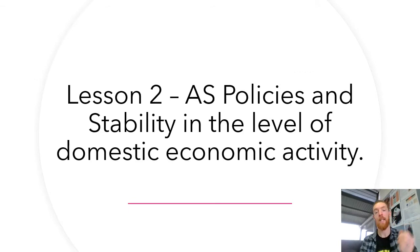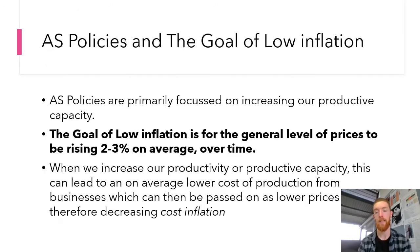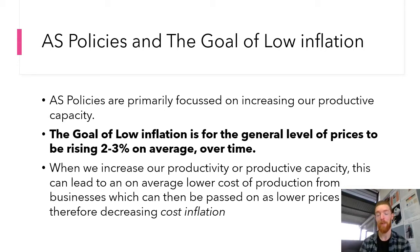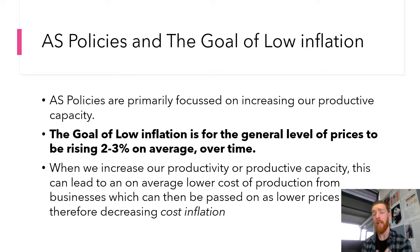AS policies and the stability in the level of domestic economic activity. First up — AS policies and the goal of low inflation. I've tried to give a very simple definition for each goal as we go along. Aggregate supply-side policies are primarily focused on increasing our productive capacity. The goal of low inflation is for the general level of prices to be rising two to three percent on average over time.